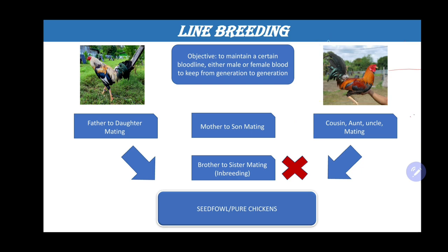You could see here in my slide that I put an X mark on brother-to-sister mating. For beginners especially who are new to breeding game fowl, you should be more careful about doing the brother-sister mating. This is a type of breeding where you lock in the genes and create your own gene pool, which I'll discuss in a future video. For now, you should not do the brother-to-sister mating.